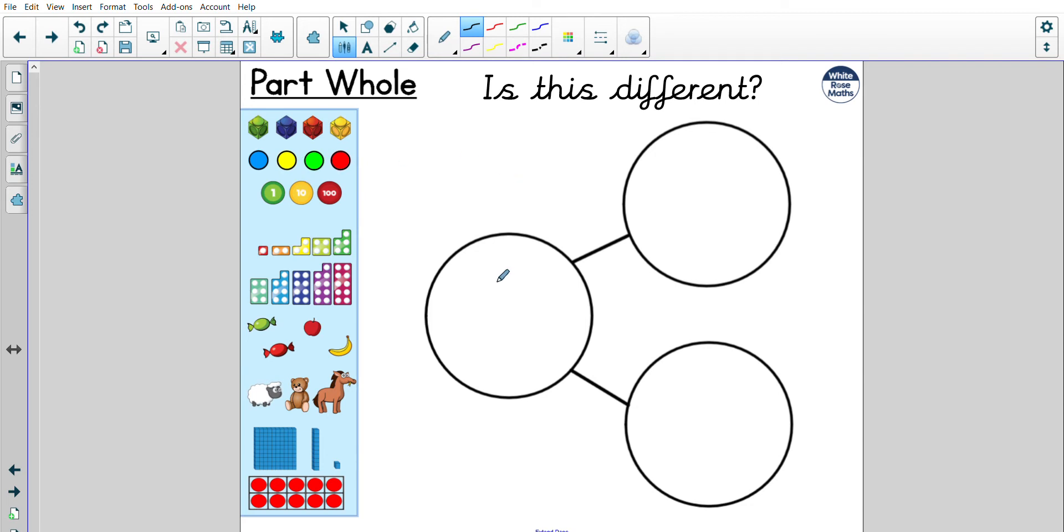What I want to know is, look at this part-whole model. Is it any different? It's been turned sideways. What do you think? That's right, it isn't different at all. If I continue with the whole number being 6, it is still made up of two parts. I could use the same numbers or I could try and think of some different ones, but today I'm going to use the same, so it would be 4 and 2.